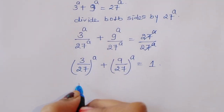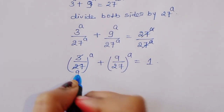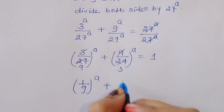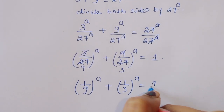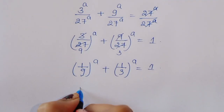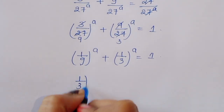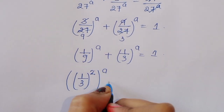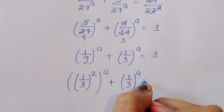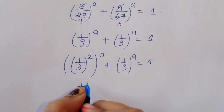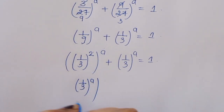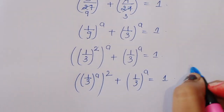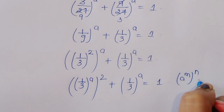Now we can write this as 1 upon 9 power a plus 1 upon 3 power a is equal to 1. Since 1 upon 9 is 1 upon 3 squared, we can write 1 upon 3 squared power a plus 1 upon 3 power a is equal to 1. We are using the formula a power m power n is equal to a power m times n.